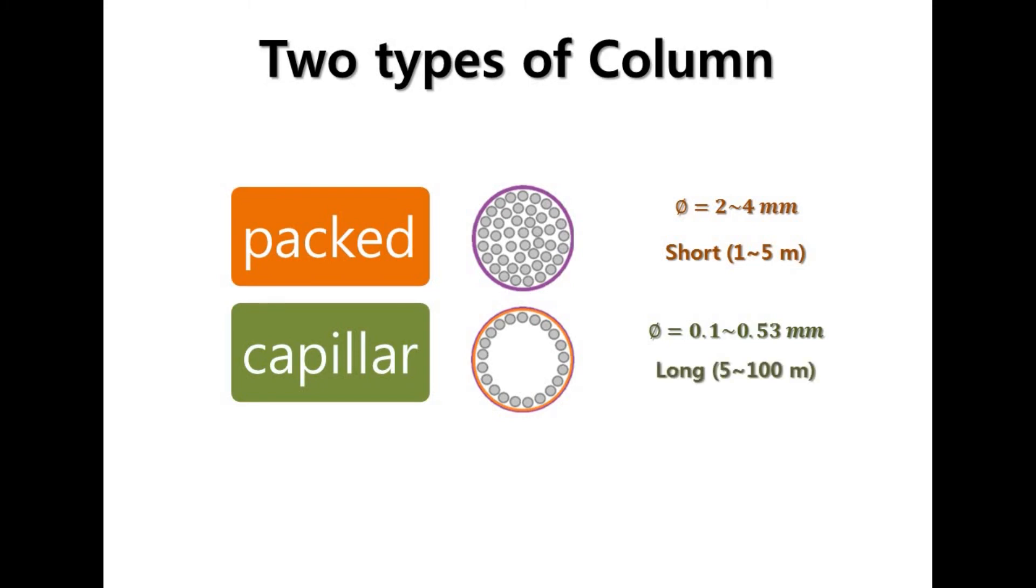When you see the structure of a packed column, it is fully packed with stationary phase and we can easily imagine that this packed column has high pressure, meaning it has a high flow rate as well. Capillary columns, on the other hand, have low pressure and low flow rate.